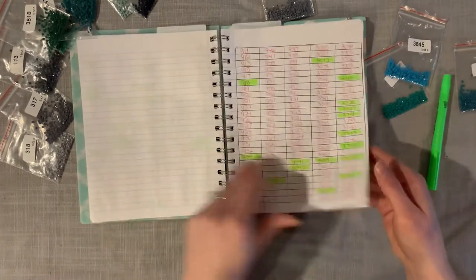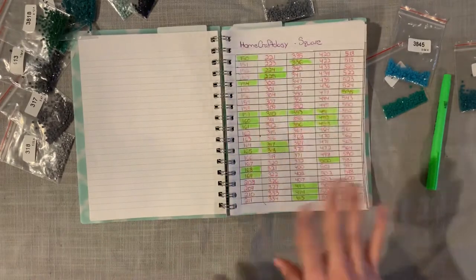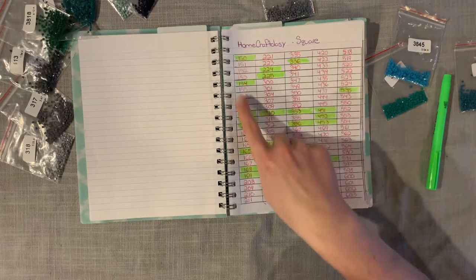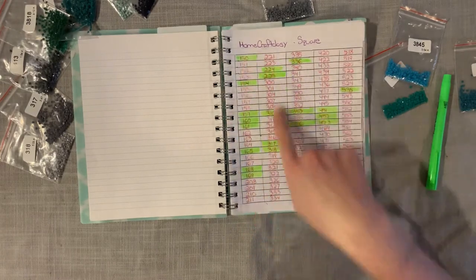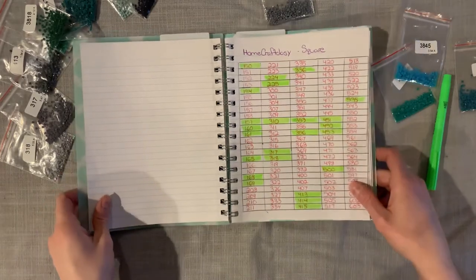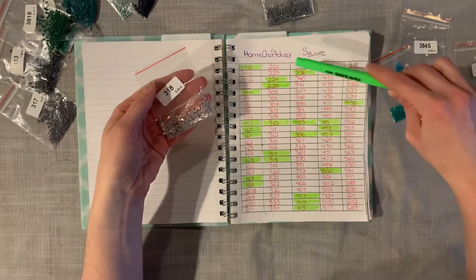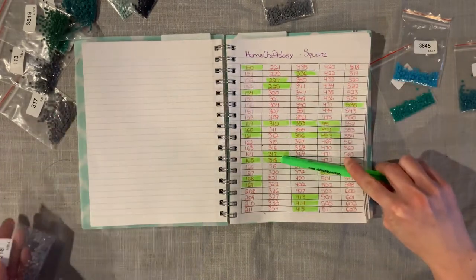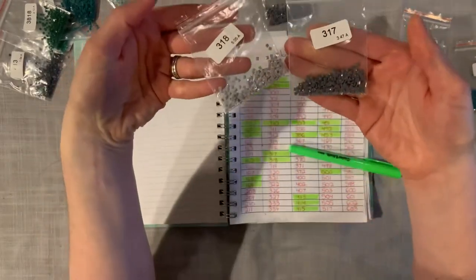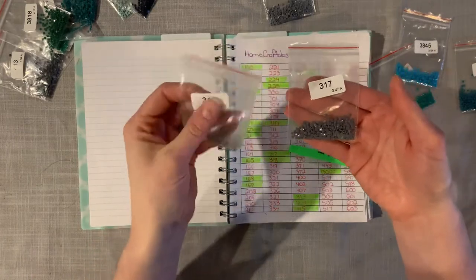But so if I go back to the Home Craftology it's pretty simple. Like I just used a ruler and I'm not a perfectionist by any means. So just roughly drew some columns and then used the lines of the paper for the rows. Filled in all of the different numbers from the chart and then just went through and highlighted what I have. So we can start with this baggie. So 318 if I go down. So I do have 318 already with Home Craftology and 317. So these two here I already have.